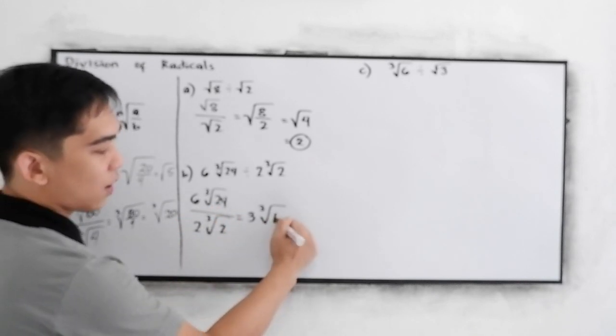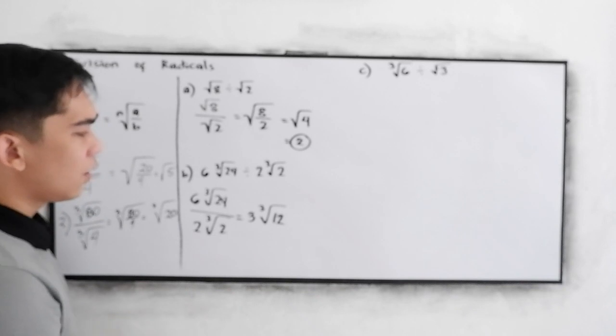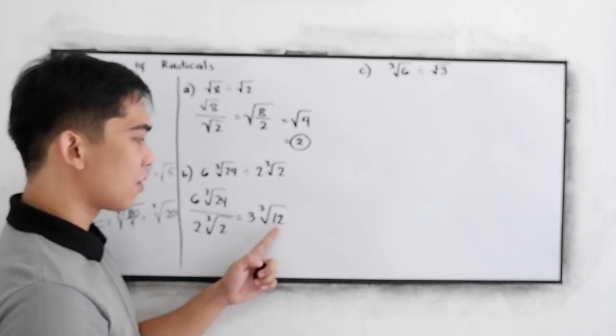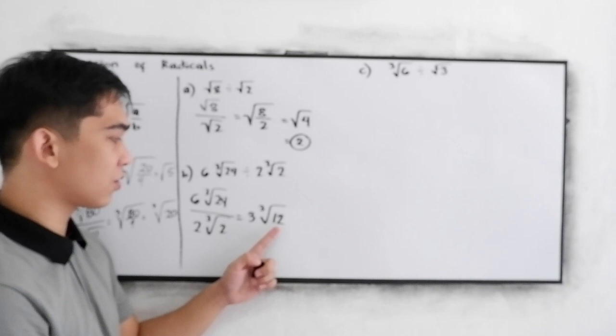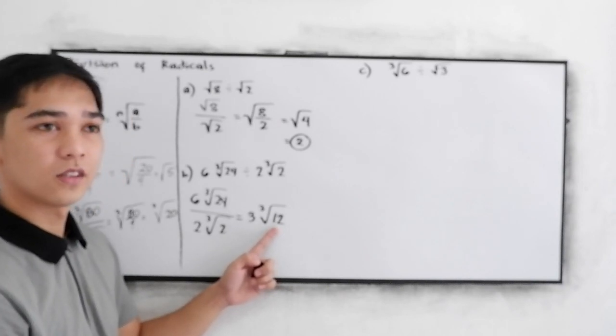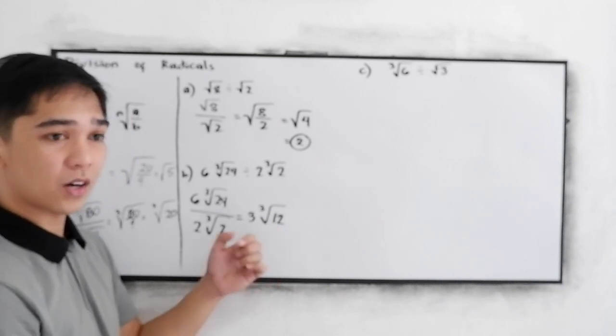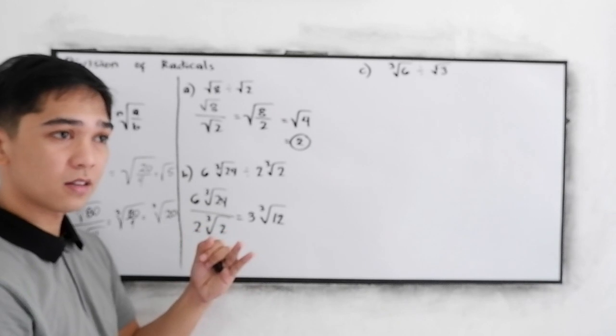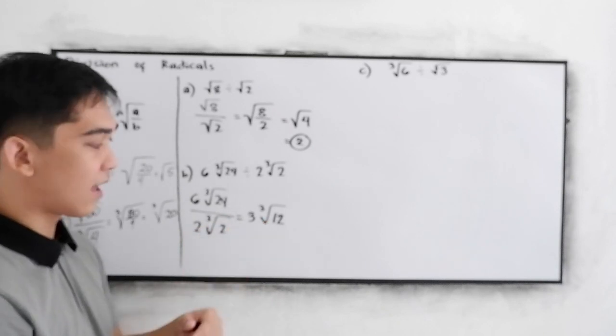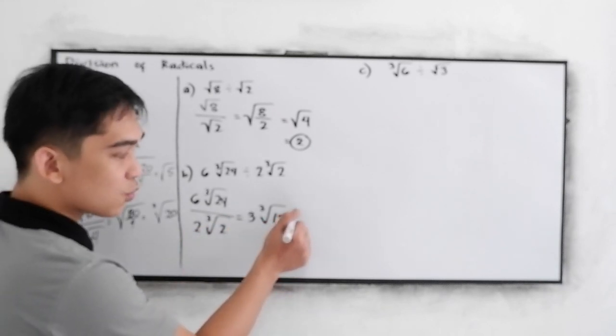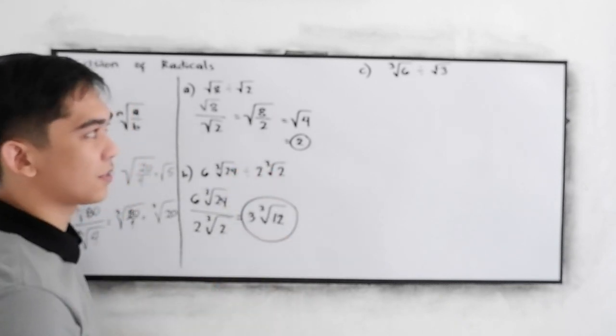Cube root of 24 divided by 2, that is 12. We have a perfect cube number that is a factor of 12. The perfect cubes are 1, 8, 27, and so on. In that case, this will be our final answer.